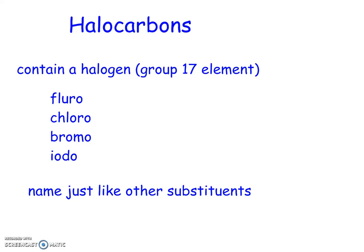A functional group is a specific arrangement of atoms in an organic compound that is capable of characteristic chemical reactions. The first functional group we're going to look at are the halocarbons. Halocarbons are organic compounds that contain a halogen, which is an element from group 17.